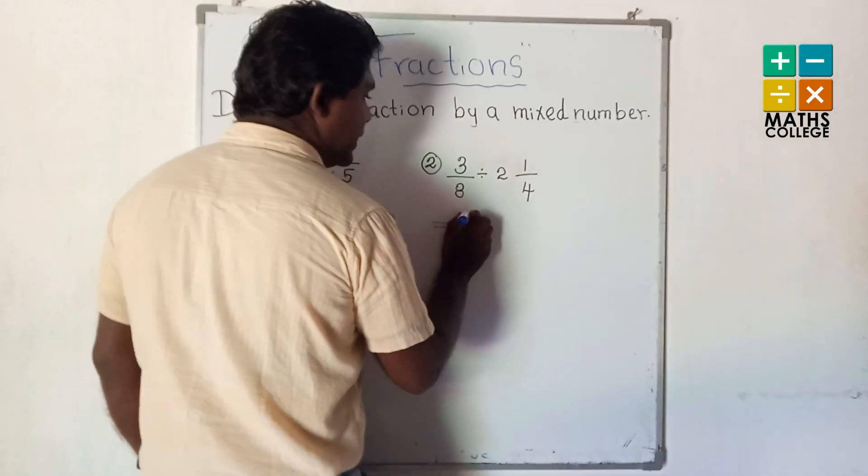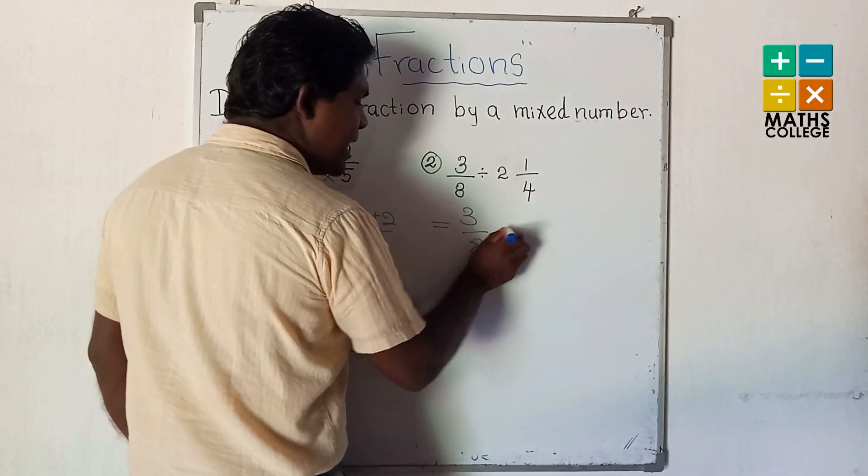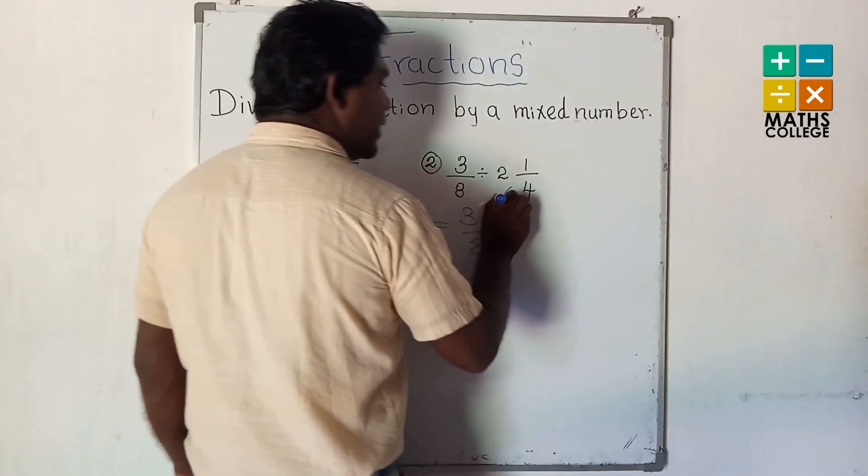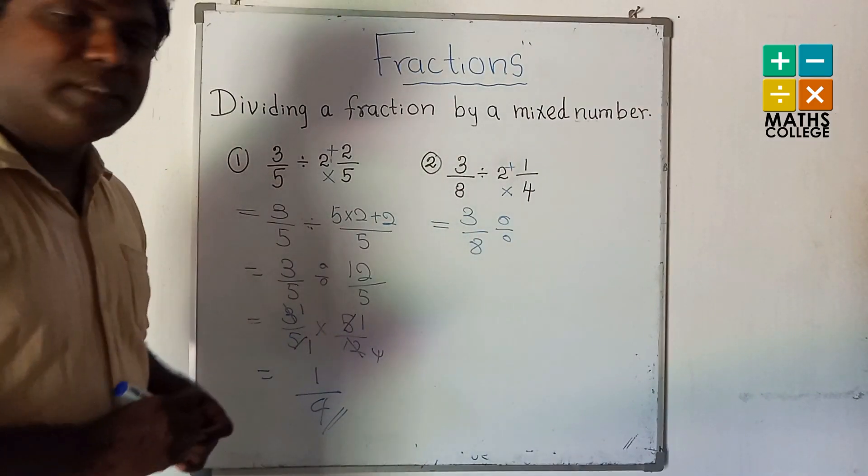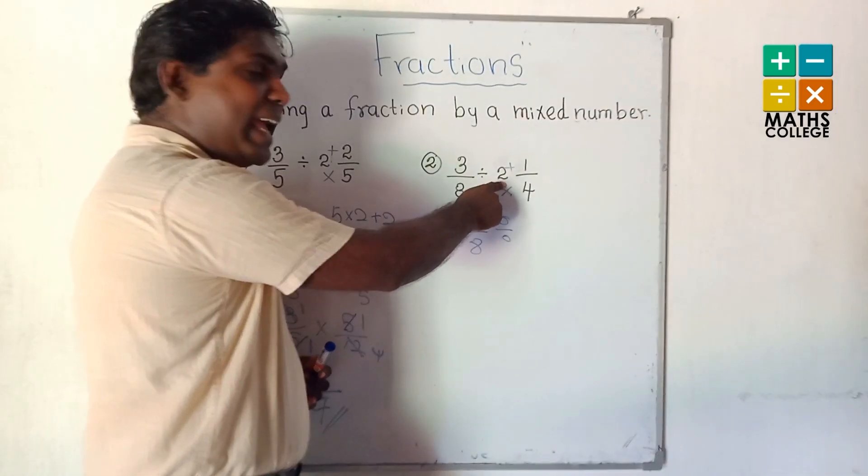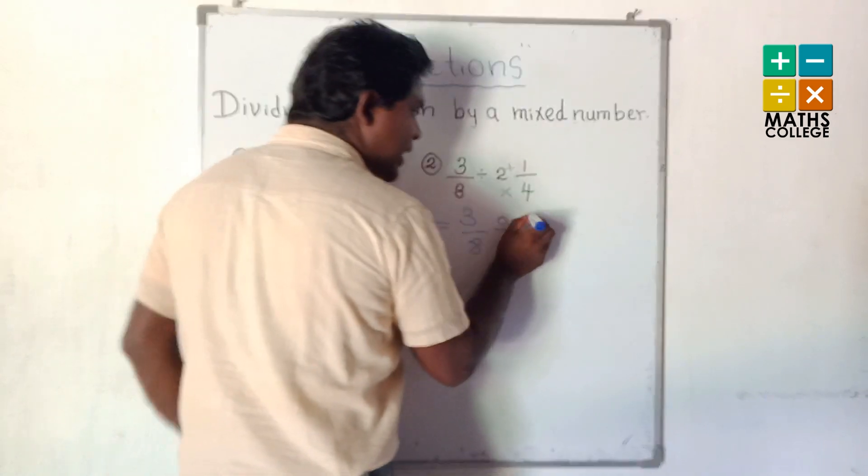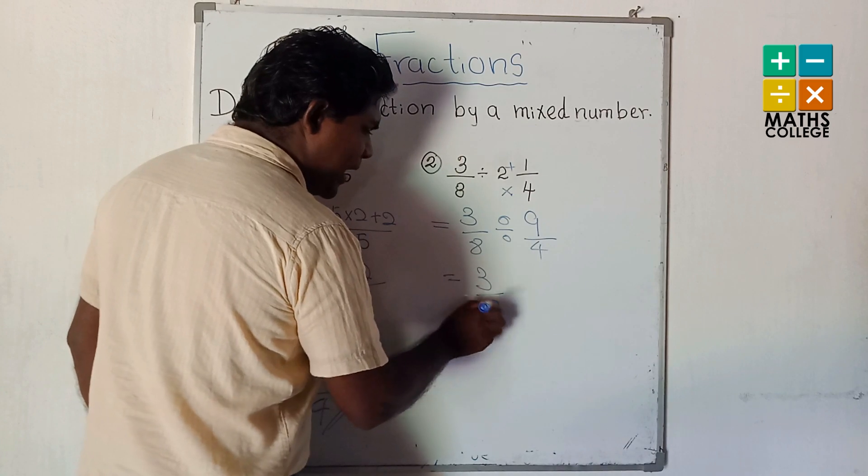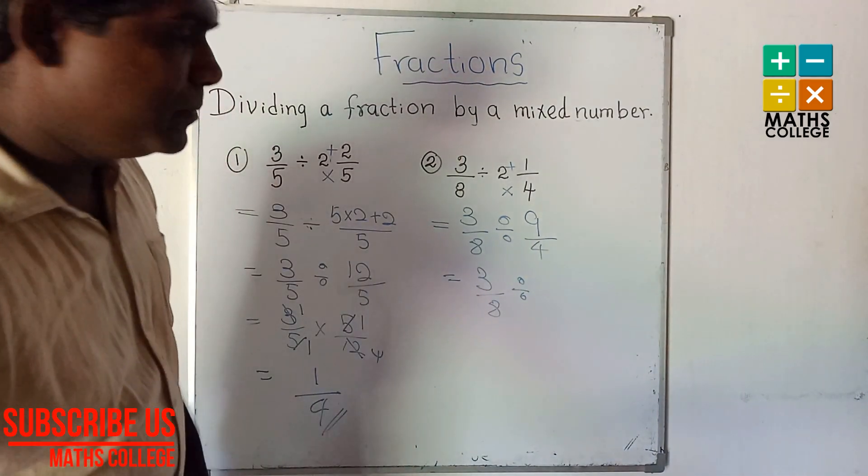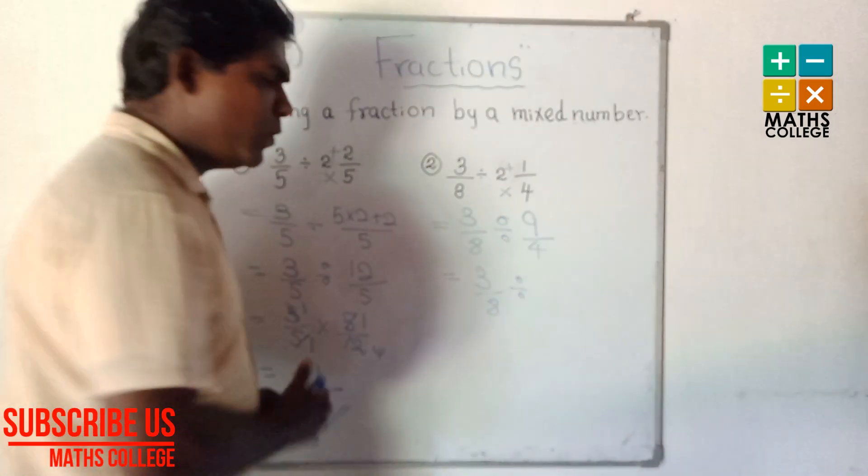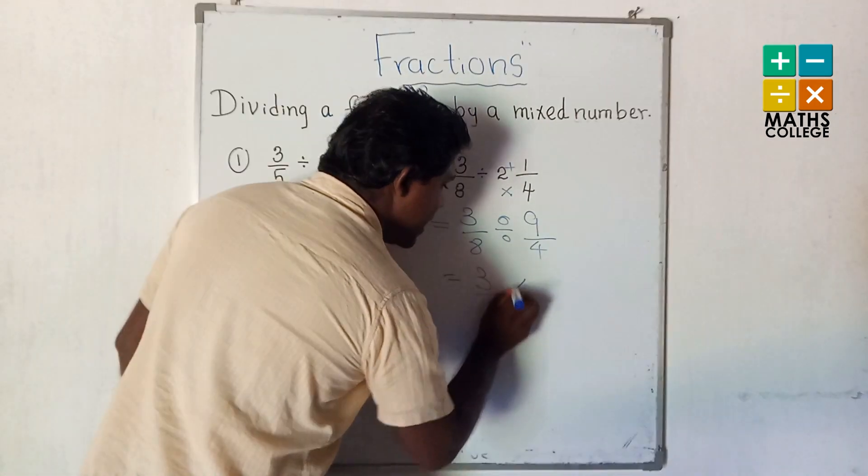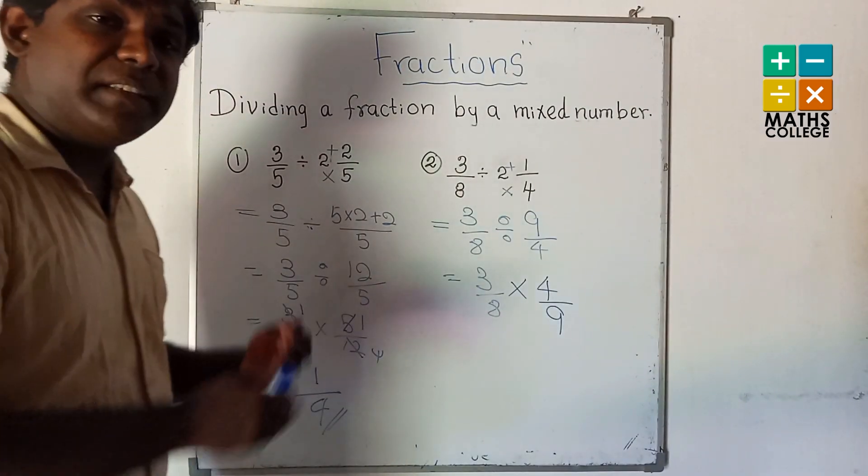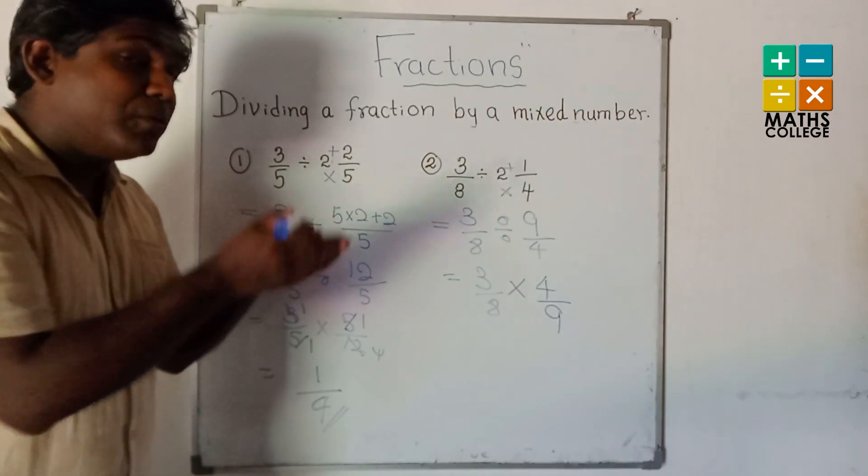Another example: 3 upon 8 divide 2 and 1/4. First, convert to improper fraction. 4 multiply 2 is 8, 8 addition 1 is 9 upon 4. So 3 upon 8 divide 9 upon 4. We can write here with multiply reciprocal. 9 upon 4 becomes 4 upon 9.